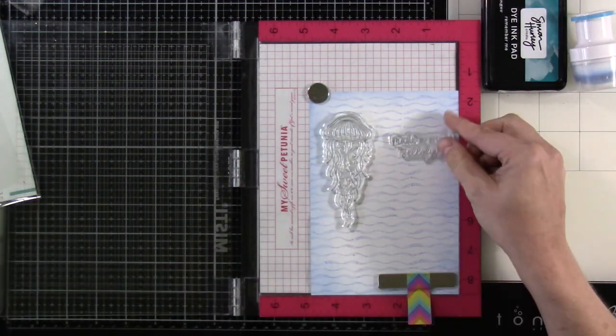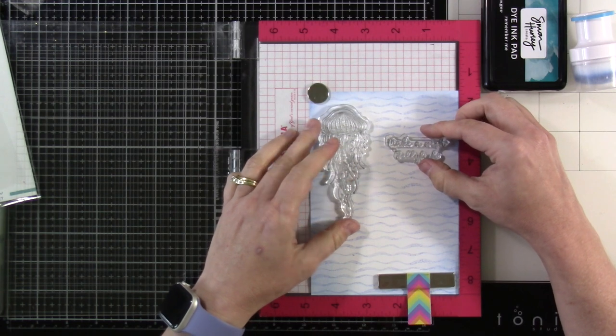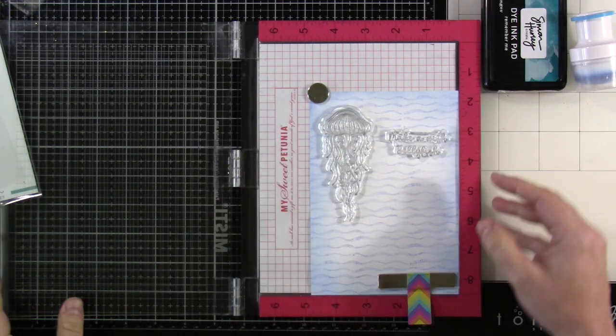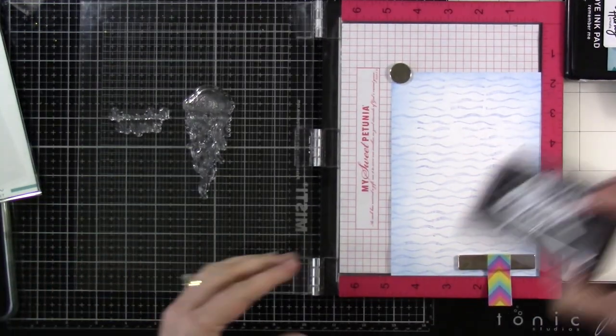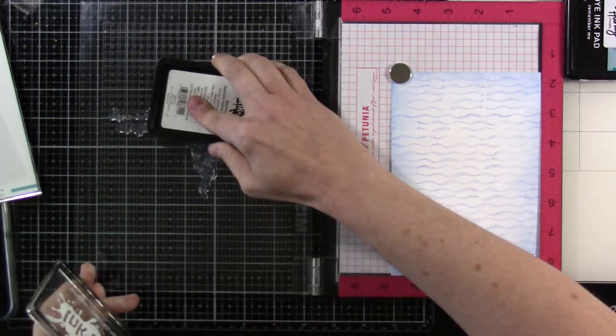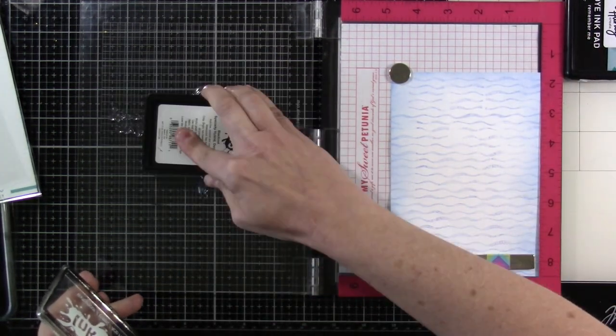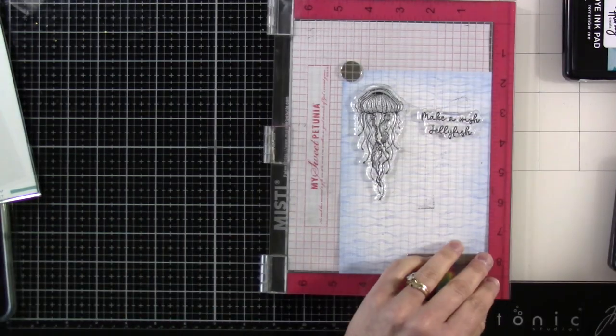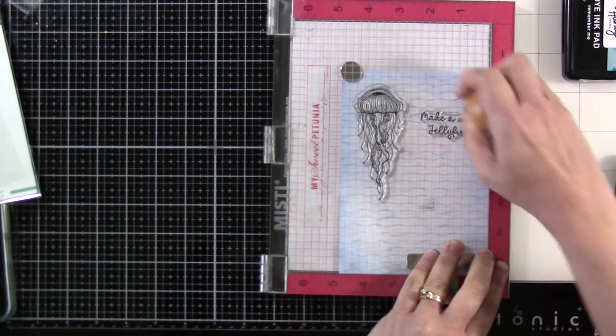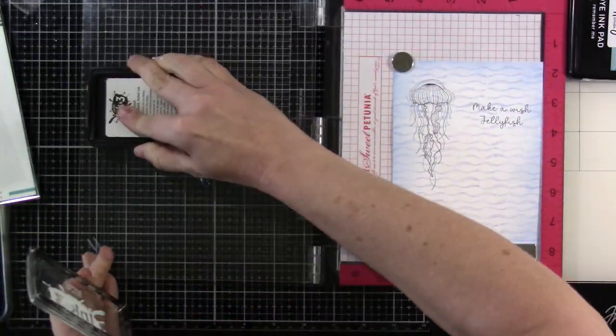Now I'm going to take that jellyfish wish, the main image from there along with one of the sentiments that says make a wish jellyfish. And I'm going to ink that up using some blackout ink. Just about any black ink would work for this or even a dark gray would work as well. I'm going to stamp that out a couple of times.